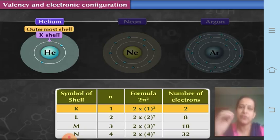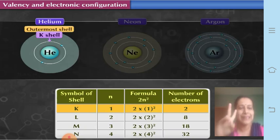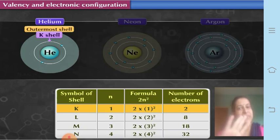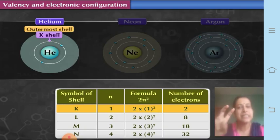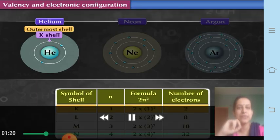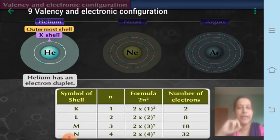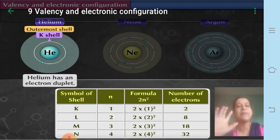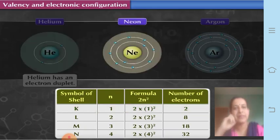The K shell has a maximum capacity of two and these two electrons are accumulated in it — meaning it is completely filled. Since it is completely filled with two electrons, it is also called a duplet. So helium has an electron duplet. Next is neon.